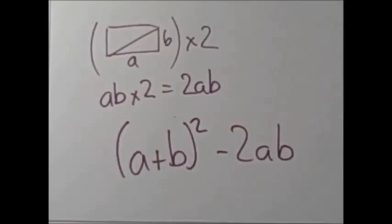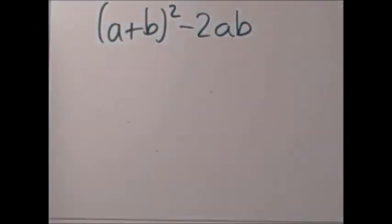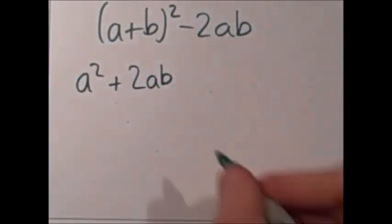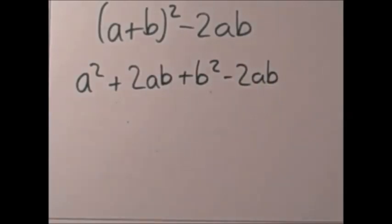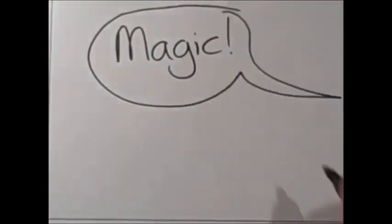So we have brackets, A plus B, squared, minus 2AB. Now we're going to simply expand these brackets. So we get A squared plus 2AB plus B squared minus 2AB. And this is all equal to C squared. We're going to simplify that down, and get A squared plus B squared equals C squared. Almost like magic.